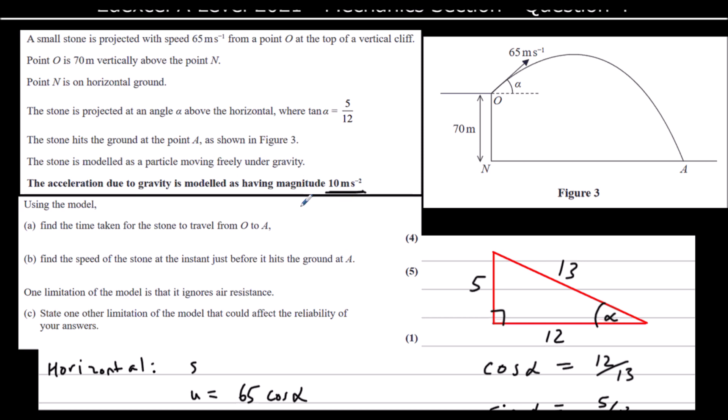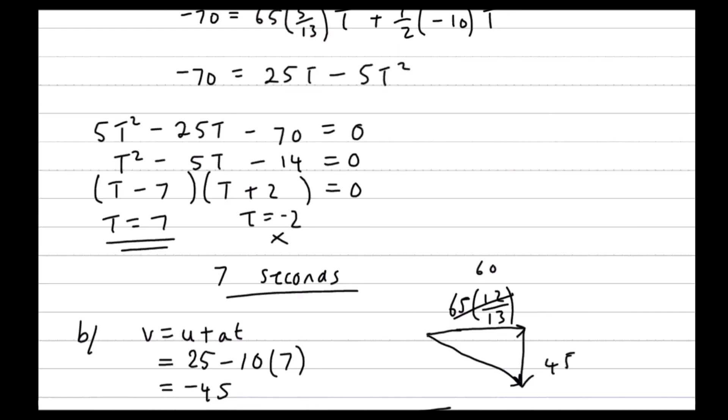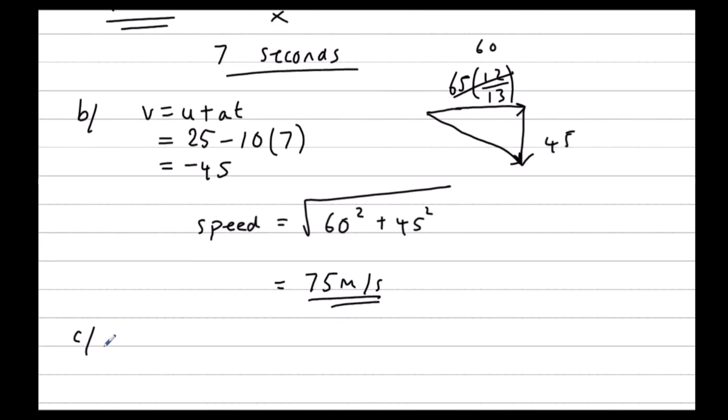But we could also use this. The acceleration has been used as 10, acceleration due to gravity. We can use a more accurate value. So you can just say we could use a more accurate value for g.